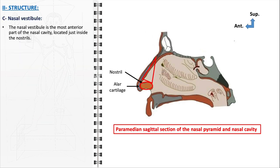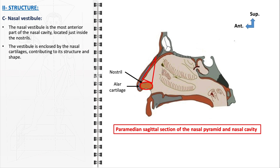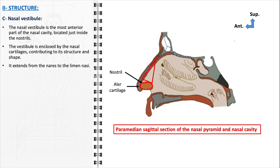The nasal vestibule represents a critical transitional area within the nasal anatomy, functioning as the foremost part of the nasal cavity and serving as an essential component in the respiratory system. Located just inside the nostrils, the vestibule marks the entry point into the nasal cavity, acting as the first line of defense for the respiratory system, filtering and processing the air that enters the nose. The vestibule extends from the nares, or nostril openings, to the limen nasi, an internal area marking the transition from the vestibule to the rest of the nasal cavity.